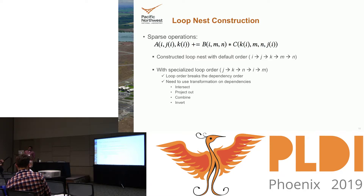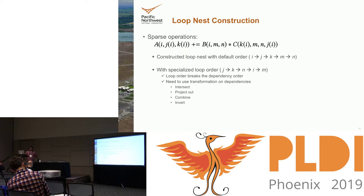In the paper there are a couple of transformations on dependent index sequences — you can intersect, project out, combine, and invert dependencies — so that you can support reordering of the loop nest and correctly write the loop nest.